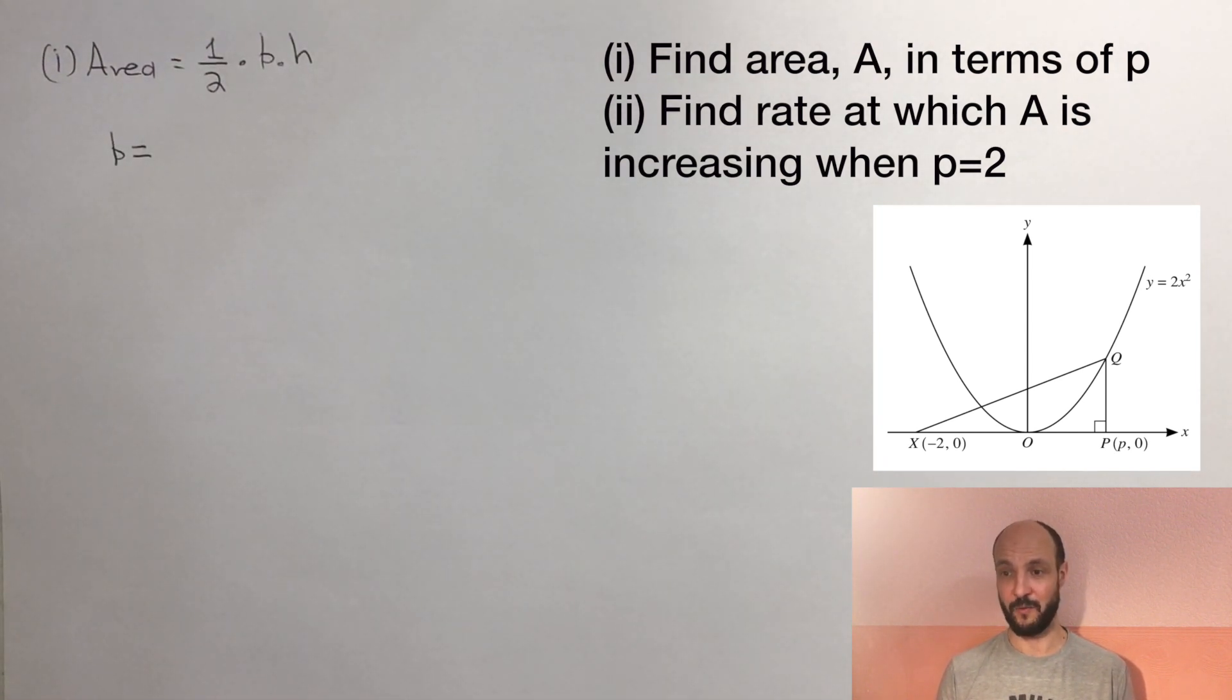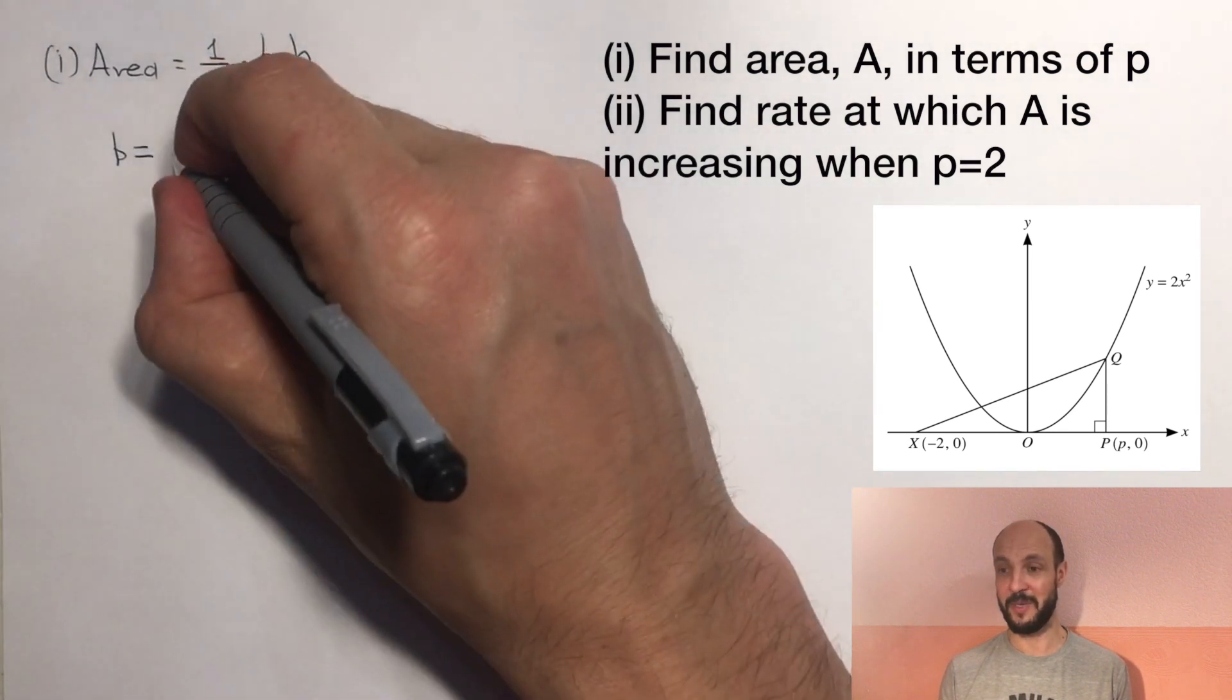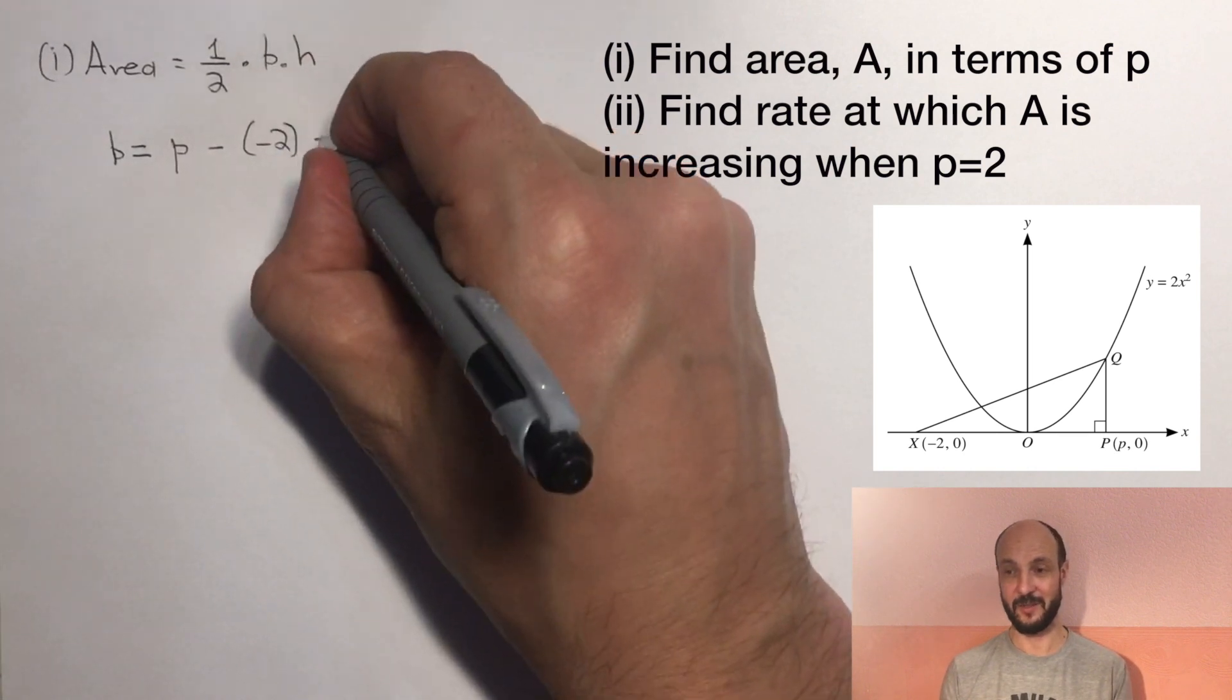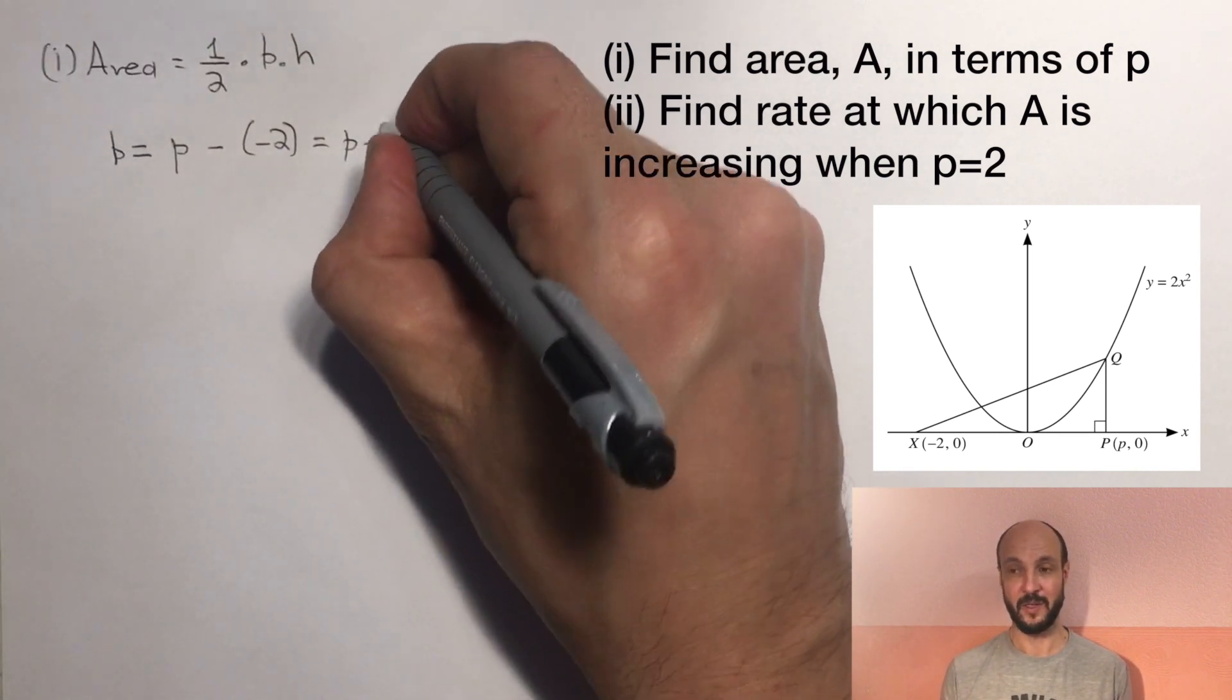Well, the base is fairly straightforward. It goes across from x to p, so that's from minus 2 comma 0 to p comma 0, and so the length of it is p minus negative 2. That has a length of p plus 2.